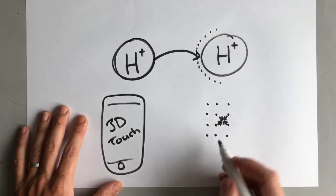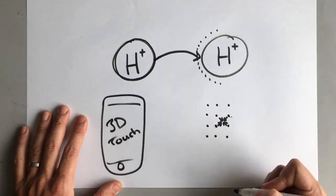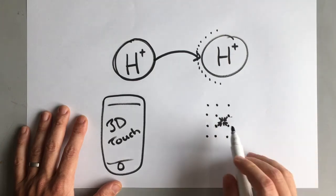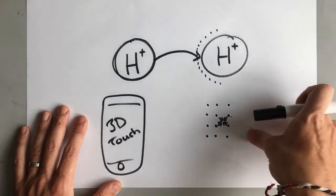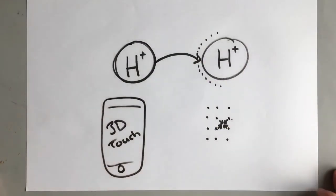They borrow energy so they can jump from one to the other and then pay the energy back. And that current, that movement of electrons, that electric current from one to the other, is recorded by the phone, and so it can tell when you're pushing harder on your phone screen. So two very different examples. Quantum tunneling is all around us. There are loads of other examples, but those are two commonly seen ones.